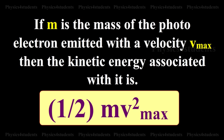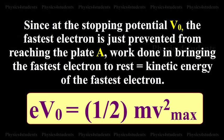If m is the mass of the photoelectron emitted with the velocity v_max, then the kinetic energy associated with it is ½mv²_max. Since at the stopping potential V0, the fastest electron is just prevented from reaching the plate A, the work done in bringing the fastest electron to rest is equal to its kinetic energy: eV0 = ½mv²_max.